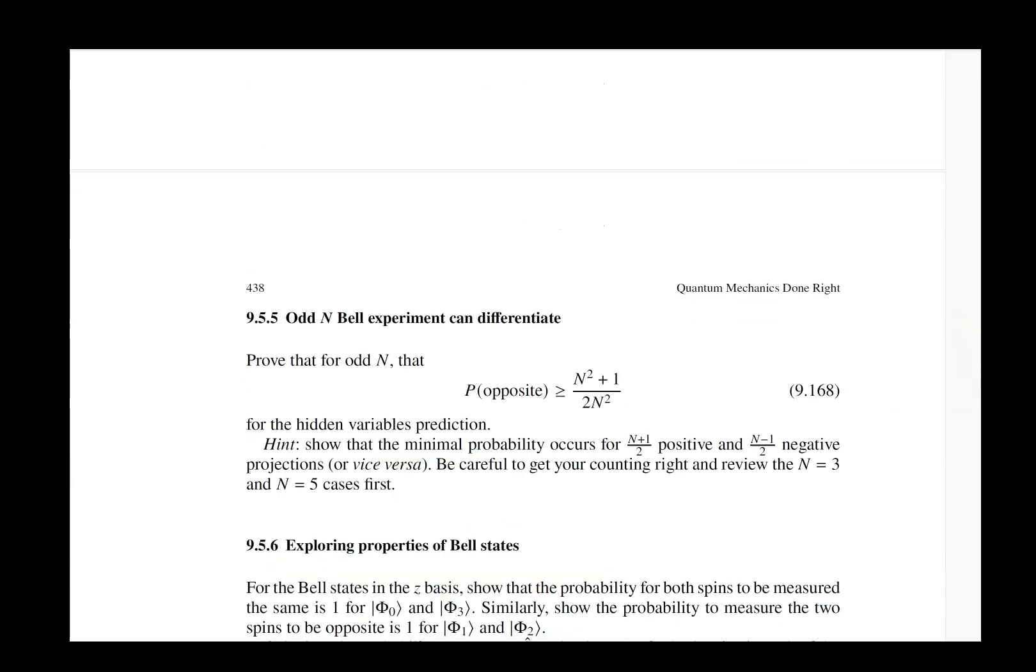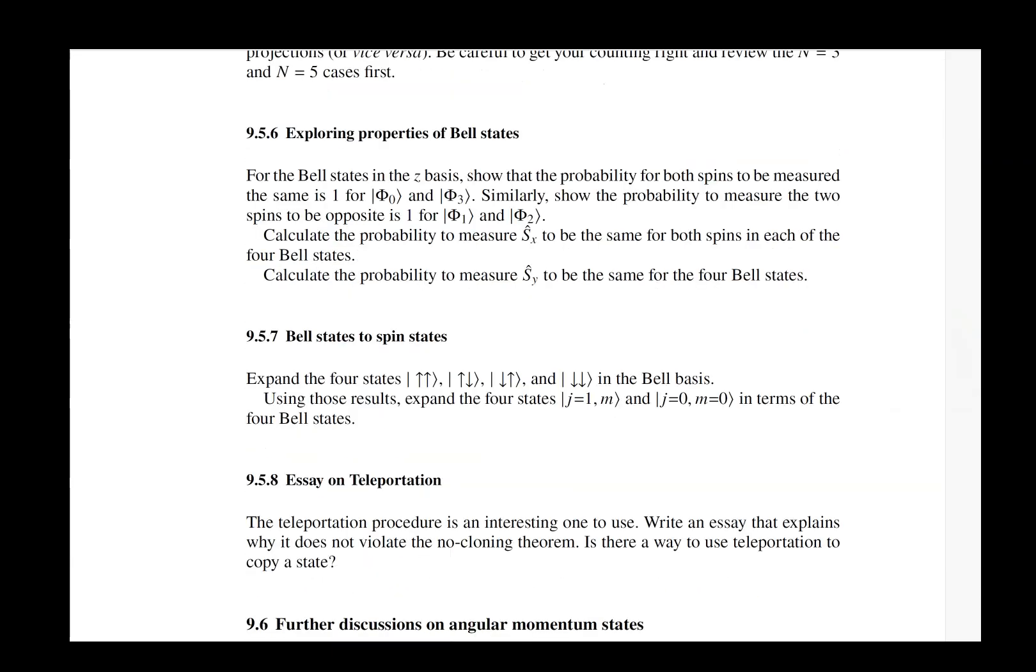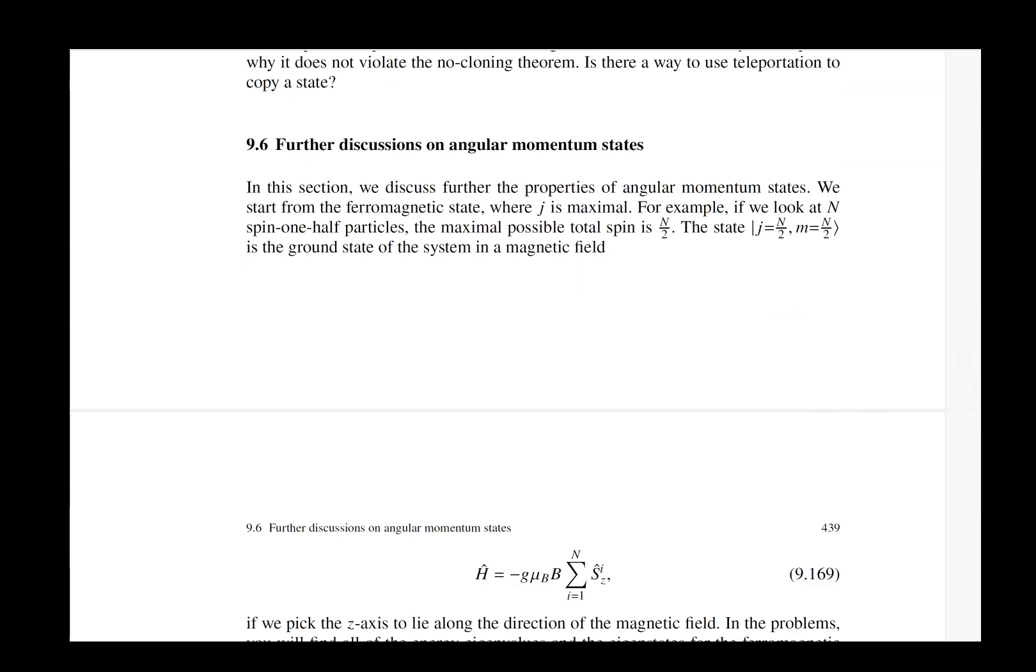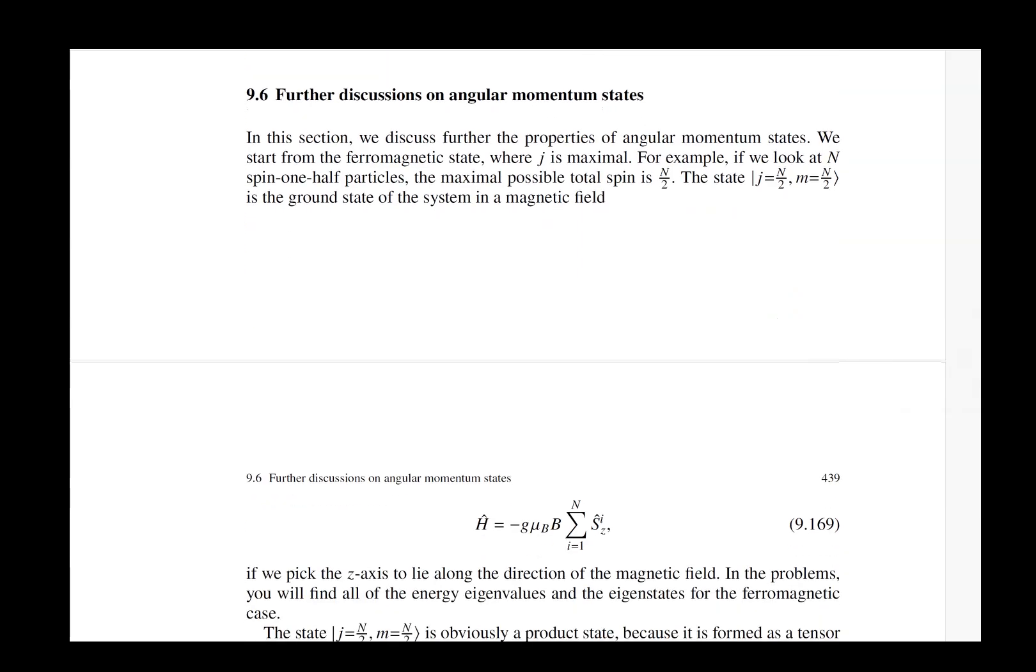There really isn't anything new here you actually already know all about the Bell experiments but by working now with the operators we can get much more quantitative. Instead of our telling you what the rules are that you have to follow which is what we did in chapter 2, here we show you how you can derive them just from the commutation relations of the operators and the properties of the states that we're working with.